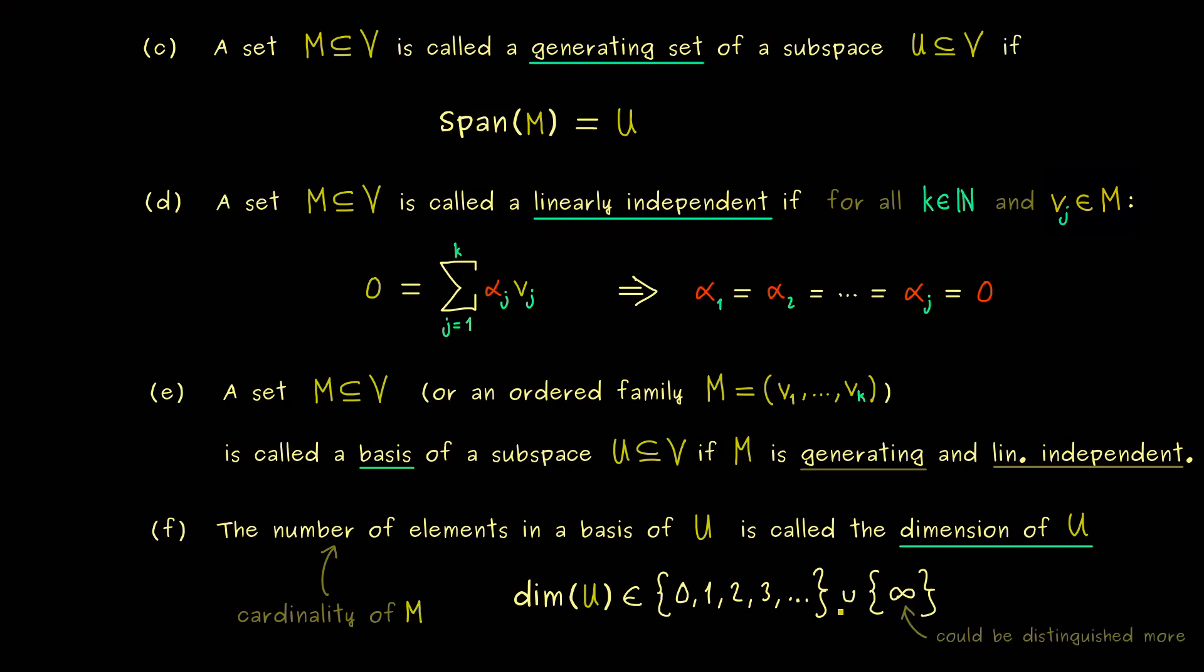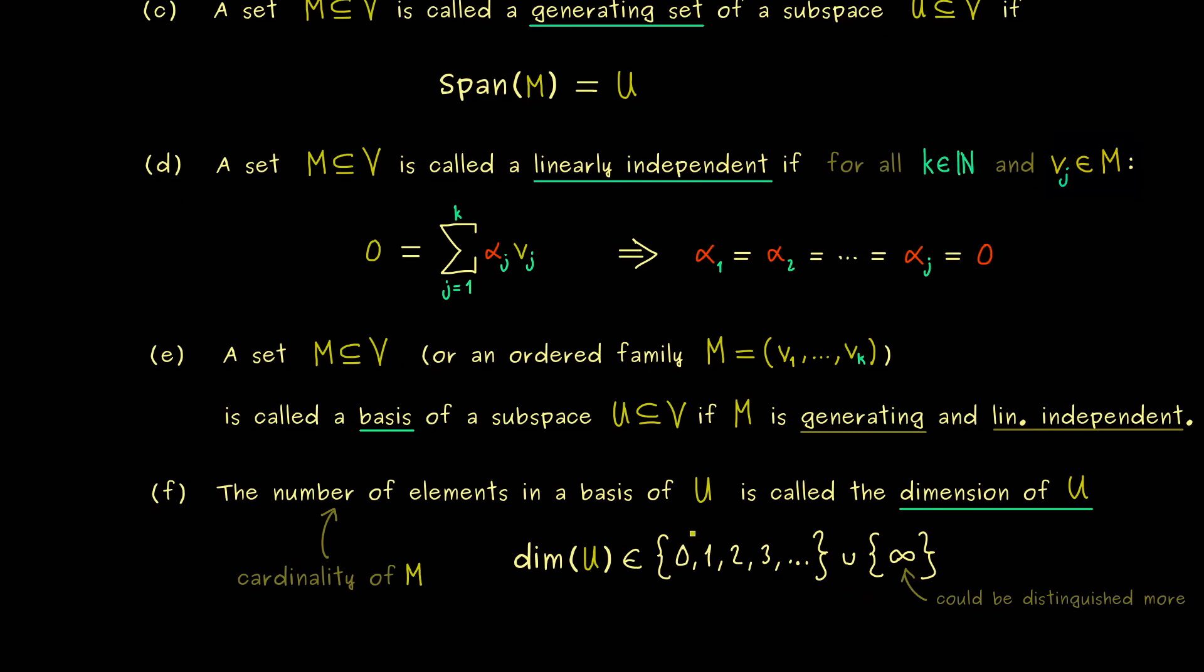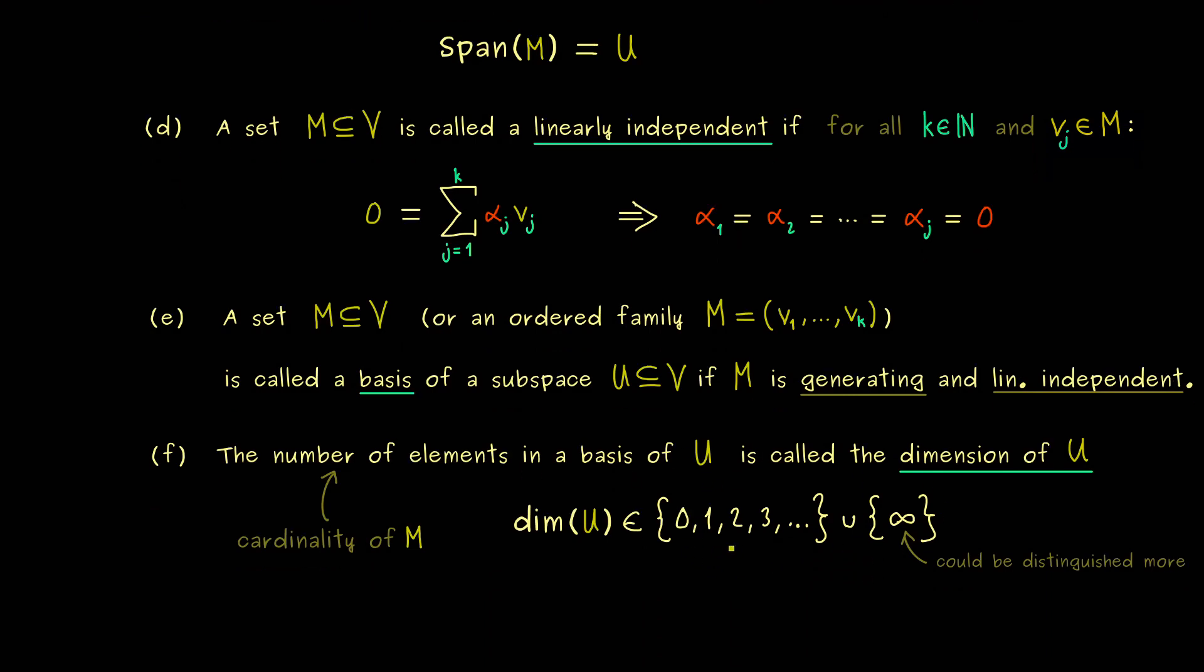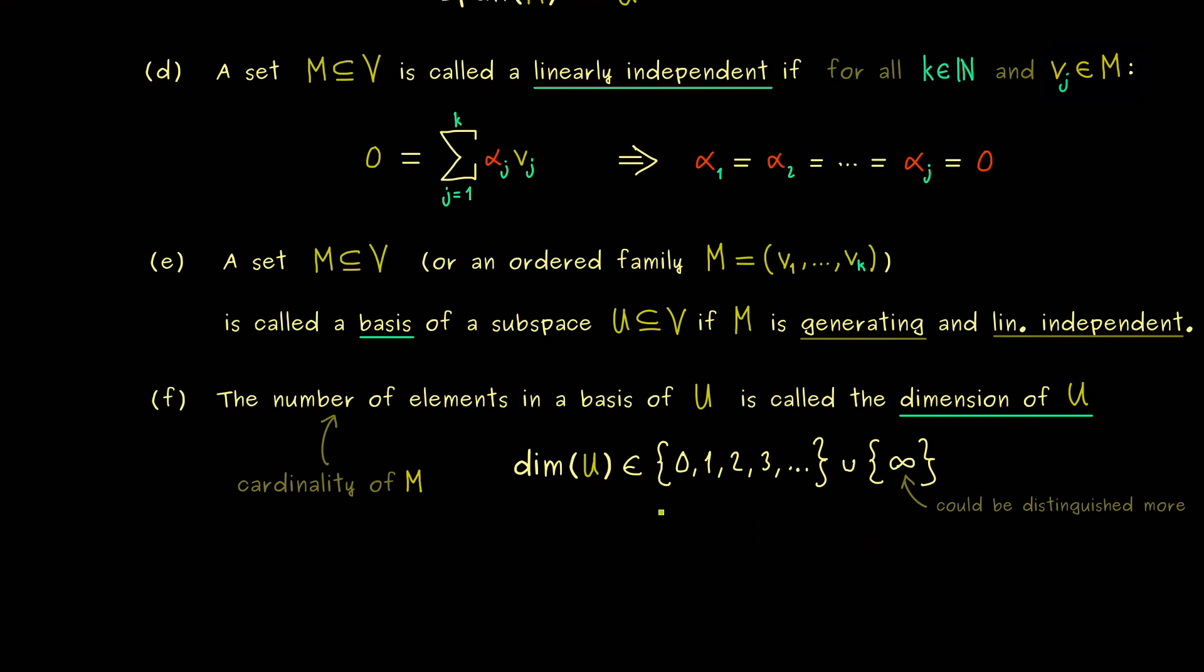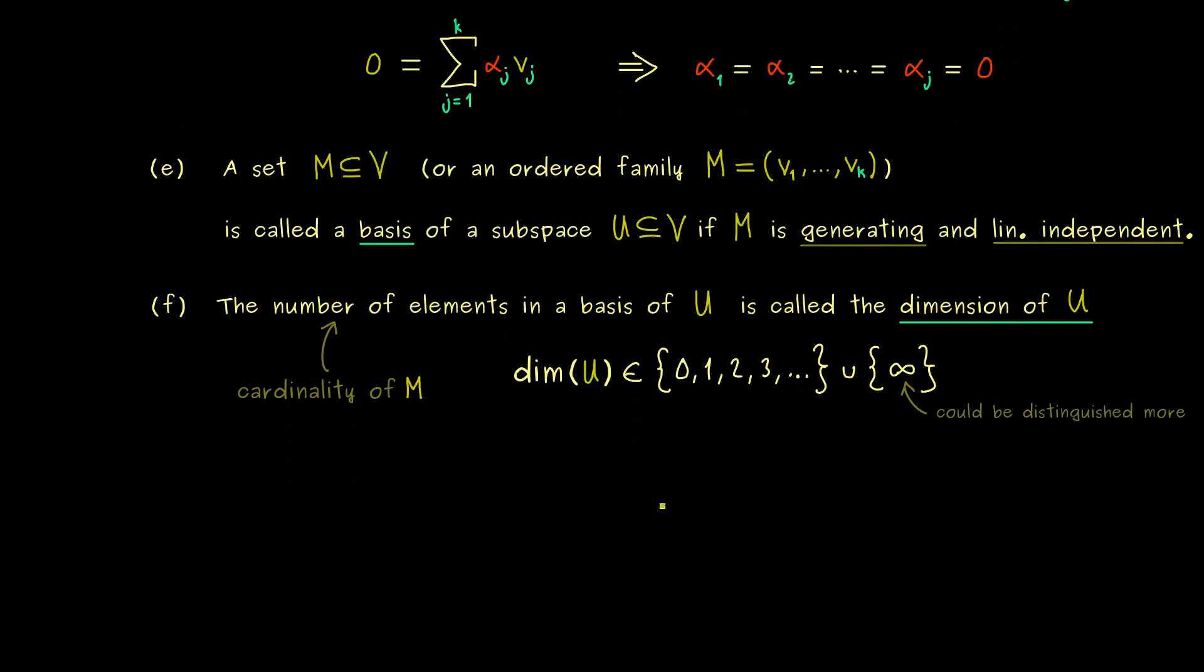However, for the infinite sets you could also distinguish different cardinalities. But I can tell you, in this course this will not be so important. Therefore we just say, we are either in the finite case or in the infinite case. Therefore we will just write that the dimension is equal to the infinity symbol, if the dimension is not a finite number.